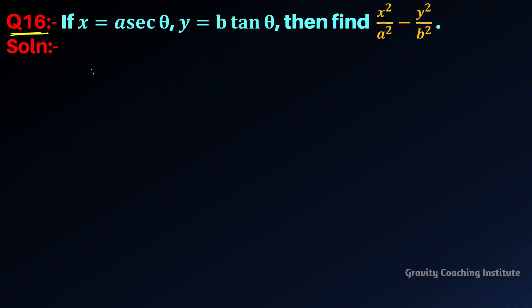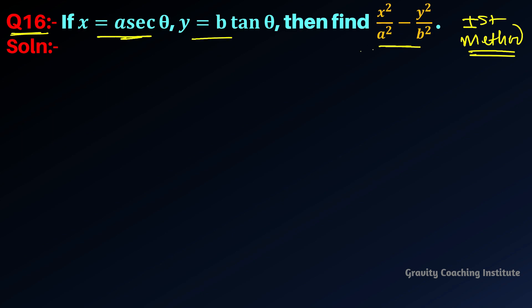Question number 16: if x equals a·sec(θ) and y equals b·tan(θ), then find x²/a² minus y²/b². This question can be solved using different methods. For the first method, we are given x²/a² minus y²/b², so we will simply substitute x and y.